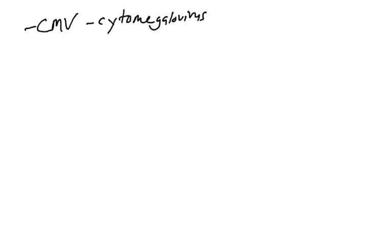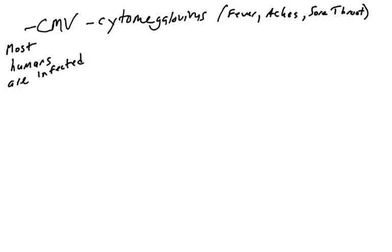The last herpes virus we'll discuss, and one that has been very well studied for its immune evasion properties, is CMV, or cytomegalovirus. Again, it's a virus that most people — at least in the U.S., probably worldwide — are infected with. When infected, it causes flu-like symptoms: fever, aches, sore throat. It typically doesn't kill people unless they're immunocompromised or very young or very old. If you have a reasonably good immune system, you can keep the infection from damaging your organs and tissues, but you can never clear the infection. So this is another virus that goes latent because it can evade the immune response.